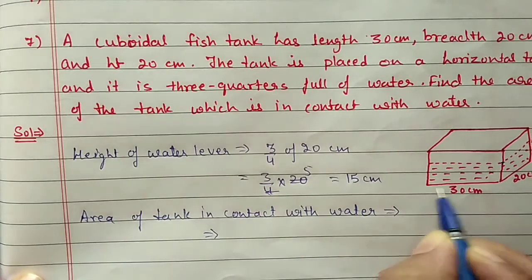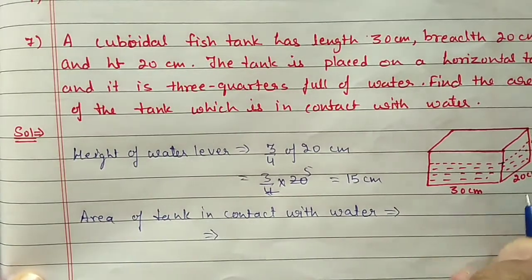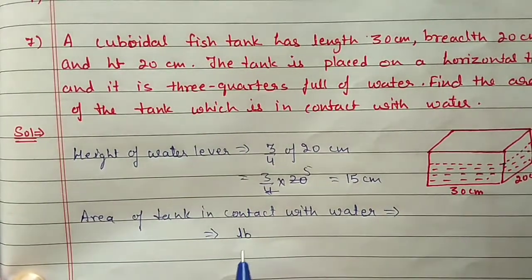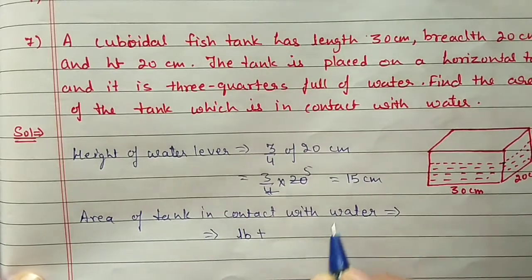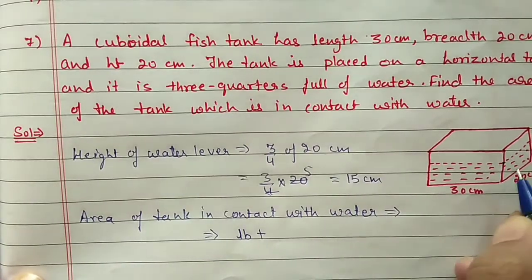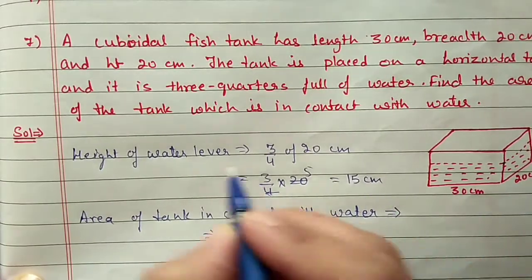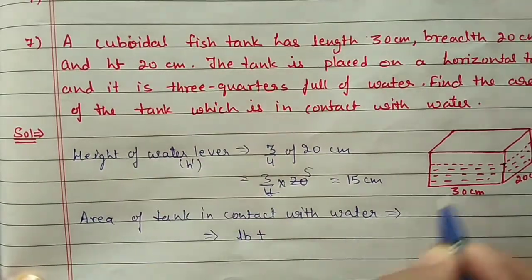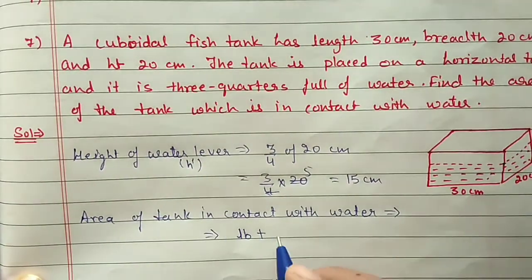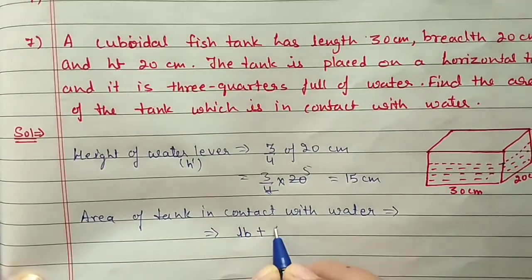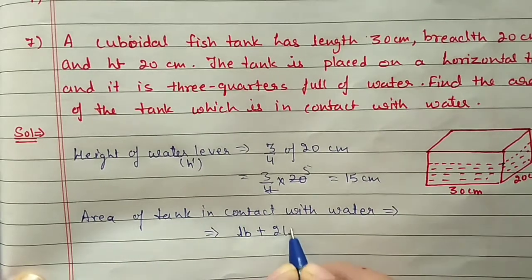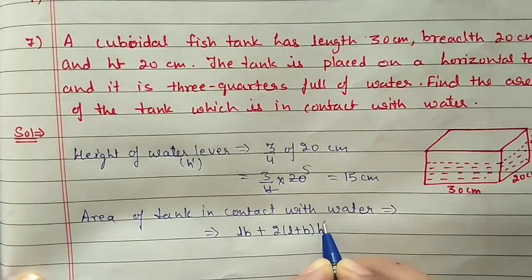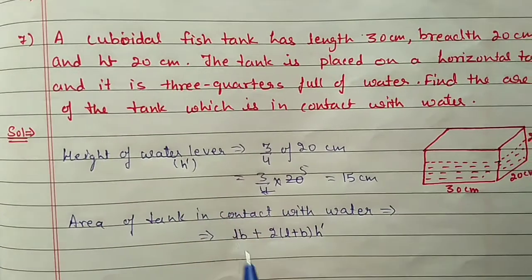First of all, the base is in contact with water, so base area will be L into B. Along with this, the four sides up to the water level height — we call it h' — so four walls area is 2(L + B) into height, where height is the water level height h'.